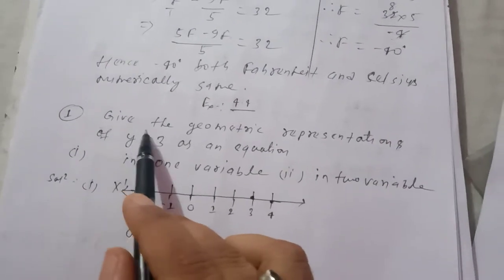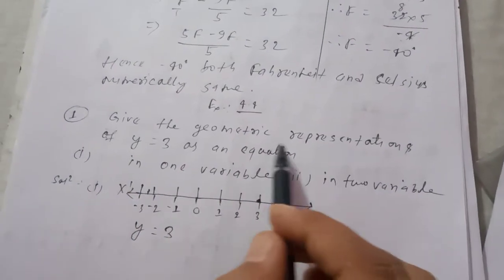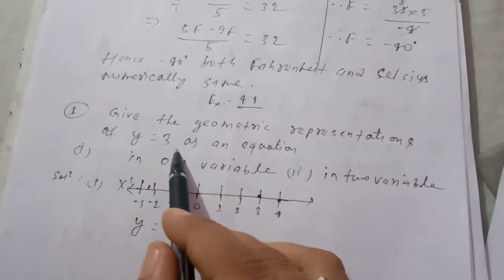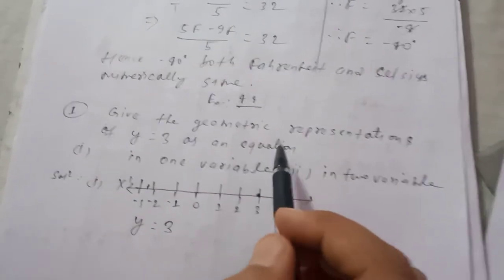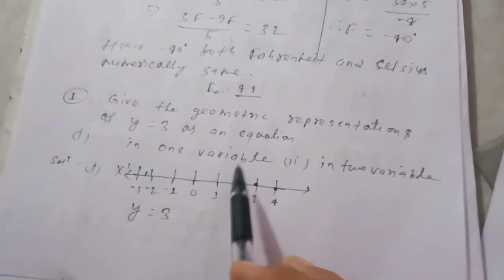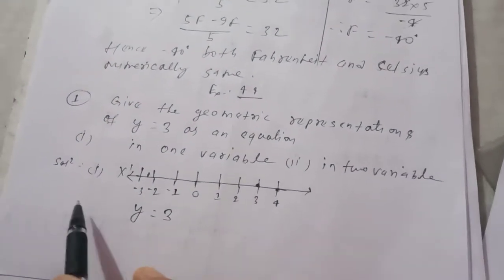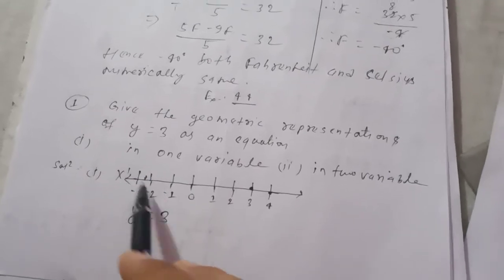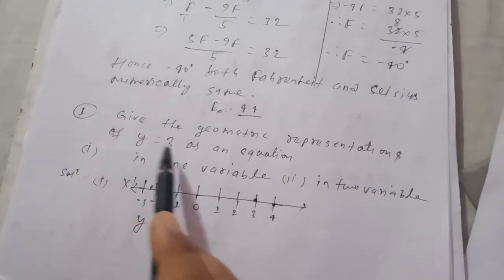Question number 1: give the geometric representation of y equal to 3 as an equation. This condition is in one variable or the other condition is in two variables. So if one variable, y equal to 3 is given,